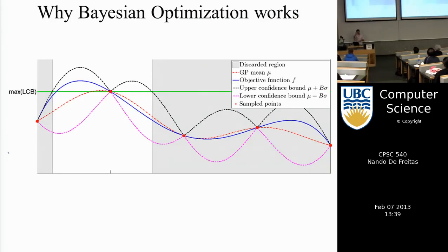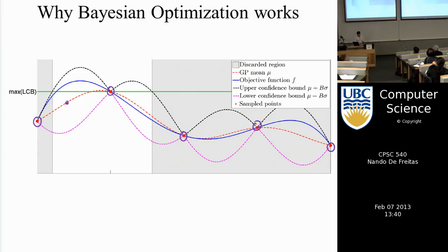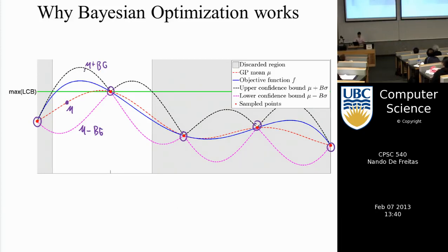Let's go back to the question of variance. Here I have some five data points, the mean of the GP mu, mu plus some constant times the variance, and mu minus some constant times the variance. With high probability, any function is captured within those bounds — any function would be between those two dashed lines.